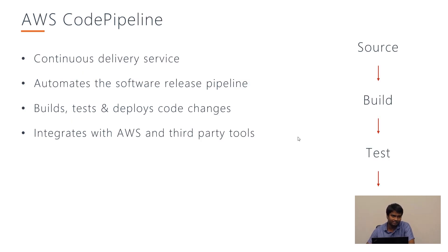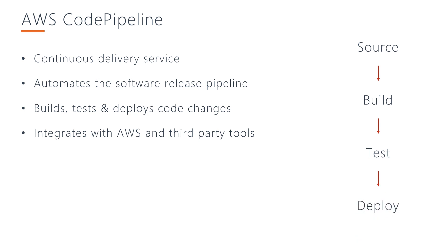AWS CodePipeline is a continuous delivery service and we can have several stages of deployment in a pipeline such as source, build, test, and deploy. The pipeline automates the software release pipeline, and we can map our current — maybe manual — release pipeline into AWS CodePipeline using its visual editor. CodePipeline will test and deploy code changes to a certain branch. That branch can be one of our main branches such as staging and production. CodePipeline easily integrates with AWS and other third-party tools to do testing, deployments, and validate our deployment.